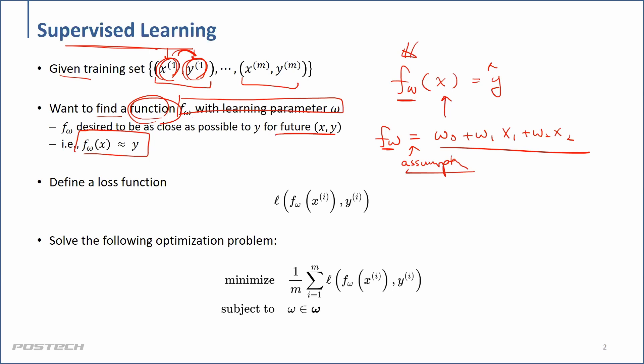What you need to remember is that we want to find the function between x and y, and in many cases function f is parameterized — say omega in this case. So how do you find f of omega?